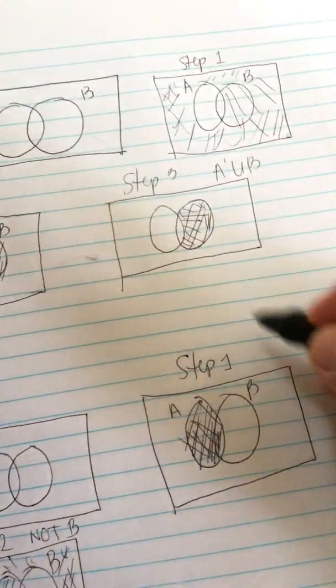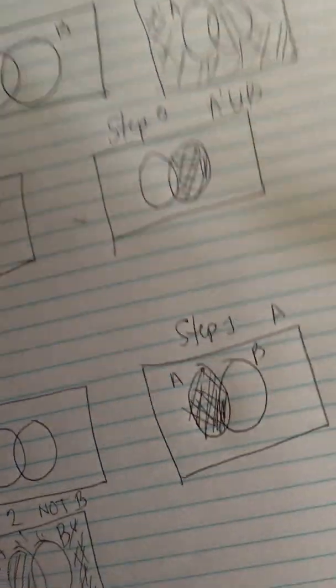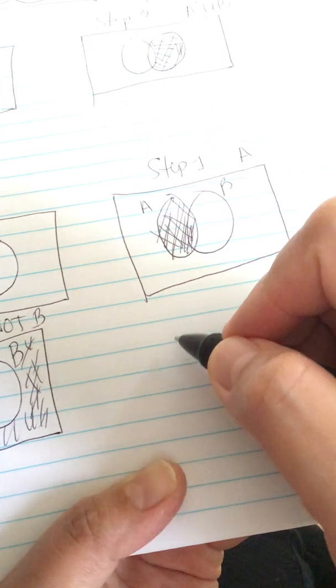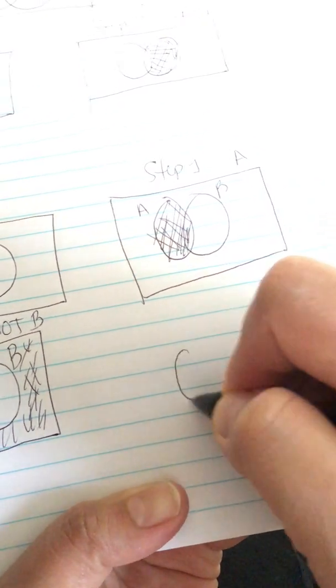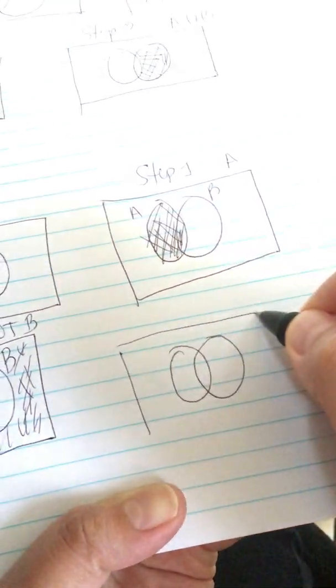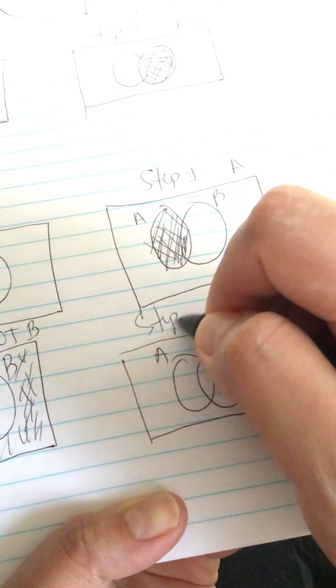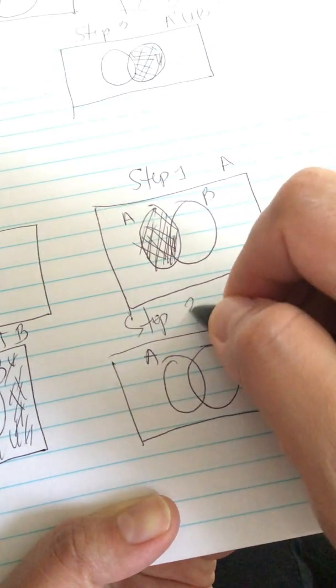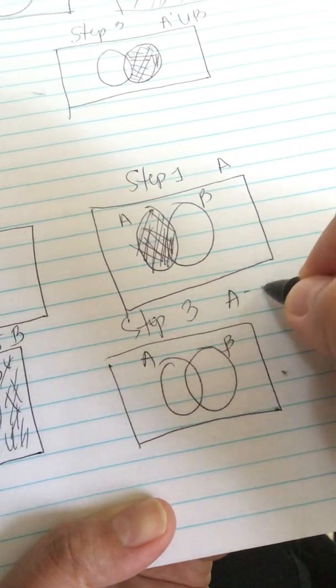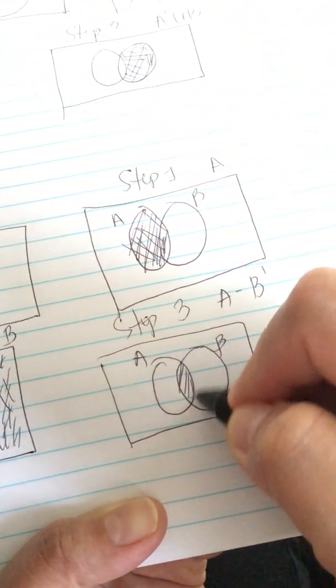Step one, this is A. So now we do A minus B. This is A. So step three: A minus B prime.